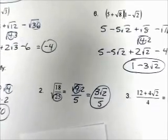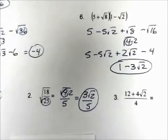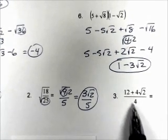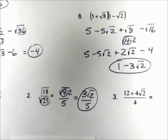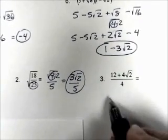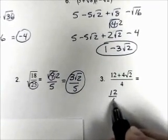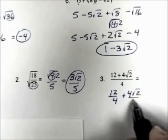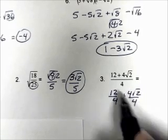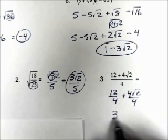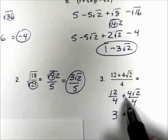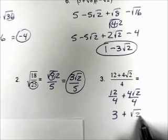Number 3, we have 12 plus 4 square root of 2 divided by 4. Each term of the numerator needs to be divided by 4, so we're going to split this up: 12 divided by 4, plus 4 square root of 2 divided by 4. Now 12 divided by 4 is 3. The 4s divide out on the second term, so we're simply left with square root of 2.